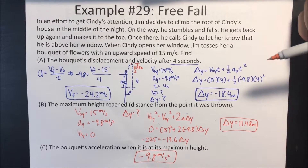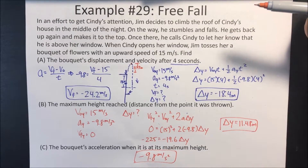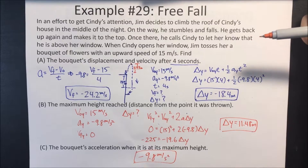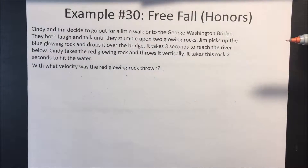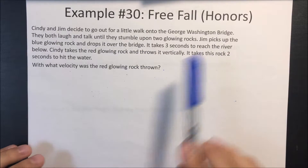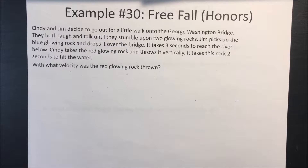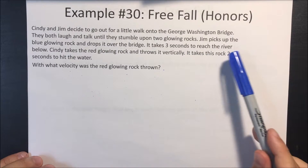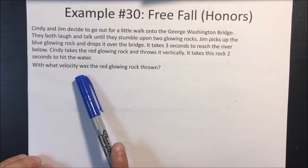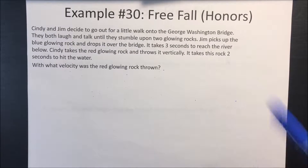Cindy catches the bouquet of flowers and is overwhelmed by Jim's gesture. Jim is feeling good about going to the winter dance with Cindy. Cindy and Jim decide to go out for a walk onto the George Washington Bridge. They stumble upon two glowing rocks. Jim picks up the blue glowing rock and drops it over the bridge — it takes three seconds to reach the river below. Cindy takes the red glowing rock and throws it vertically downward; it takes two seconds to hit the water. With what velocity was the red rock thrown?